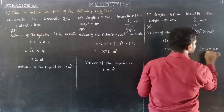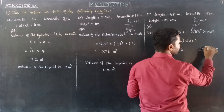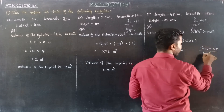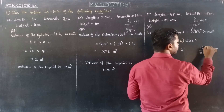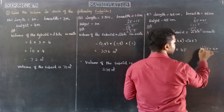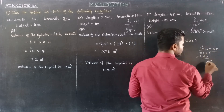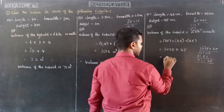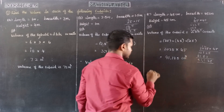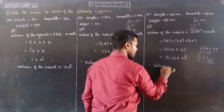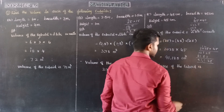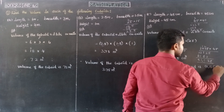So, 2025 into 45. 5 times 5 is 25, remaining 2. 5 times 5 is 10, plus 2 is 12, remaining 1. 5 into 0 is 0. 4 times 5 is 20, remaining 2. 4 times 2 is 8, plus 2 is 10, remaining 1. 4 into 0 is 0. So, 91,125. Therefore, 91,125 cm cube. Therefore, volume of the cuboid is 91,125 cm cube.